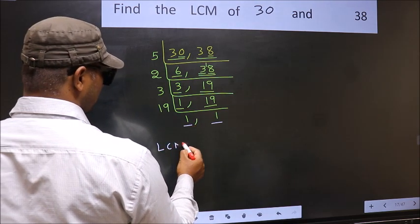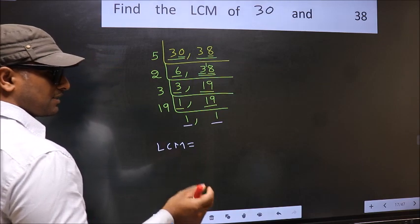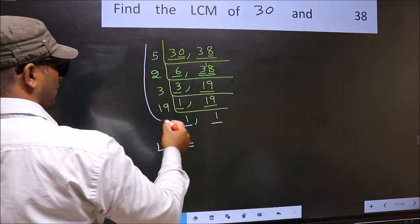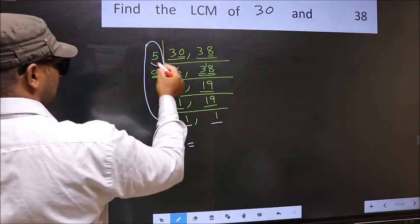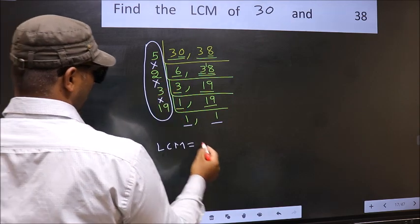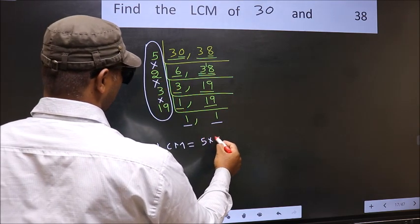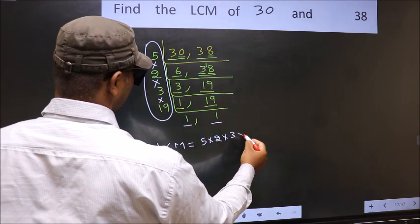So our LCM is—LCM is the product of these numbers. That is 5 into 2 into 3 into 3 into 19.